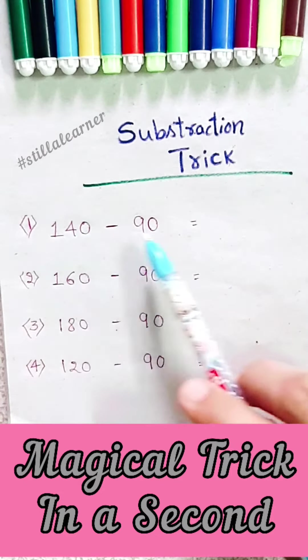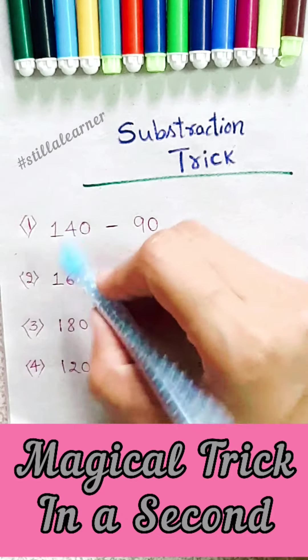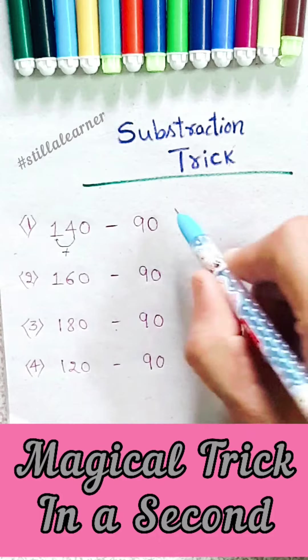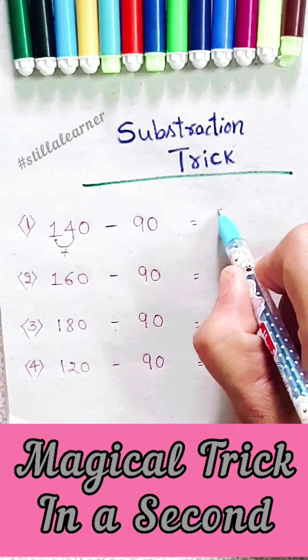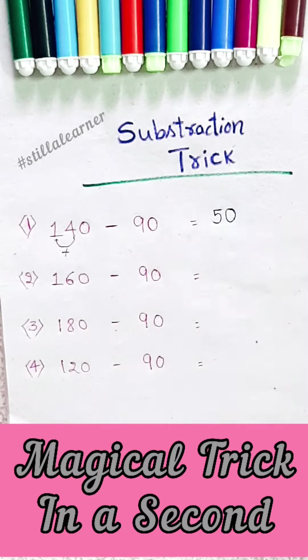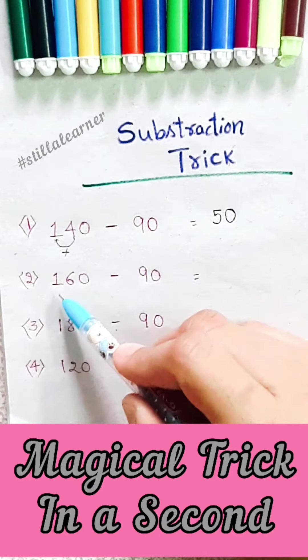Given 140 minus 90, what you have to do is add 1 plus 4, that is 5. After that, you put 0. That is your answer. Understood? Next number is 160 minus 90.